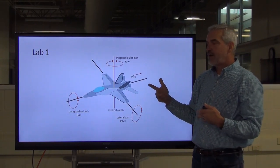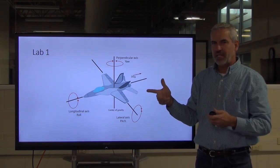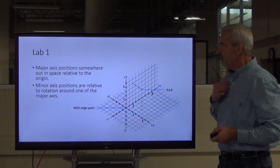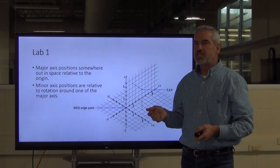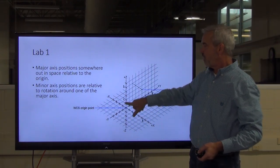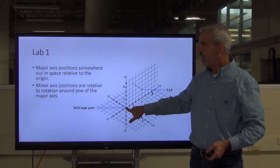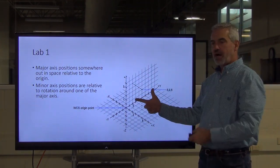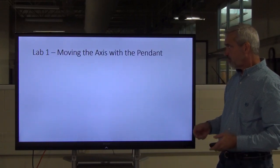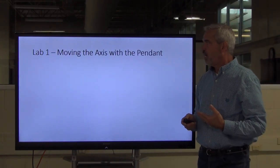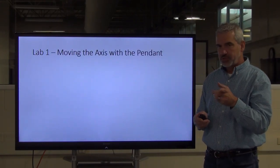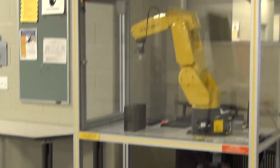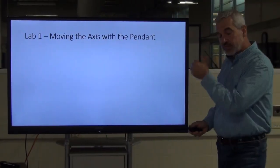Again, it's kind of hard to describe here on the video. You're going to see it when you get live in front of the robot. Again, it's going to give you some heads up on this stuff. So, major axis positions are points somewhere out in space that are relative to the point of origin. And your minor axis positions are relative to the rotation of the major axis. So, here's what we're going to do. We're going to move the robot. I'm going to step over here just a second and turn it on real quick. And let's start getting booted up.